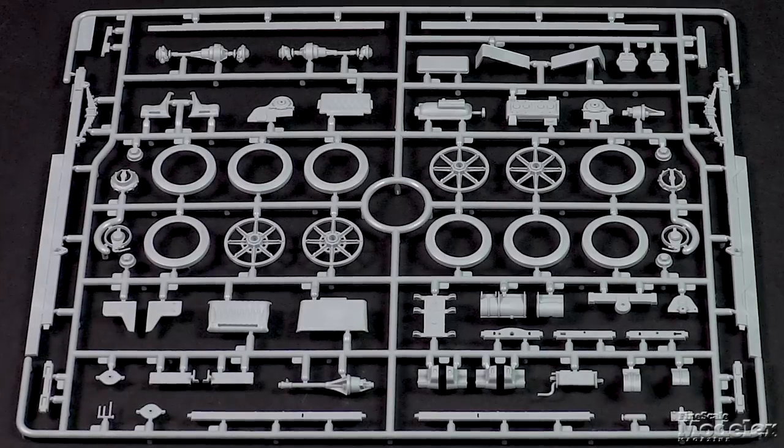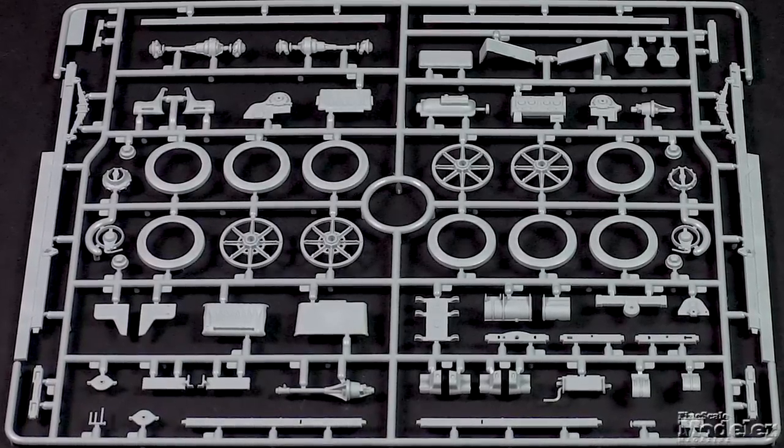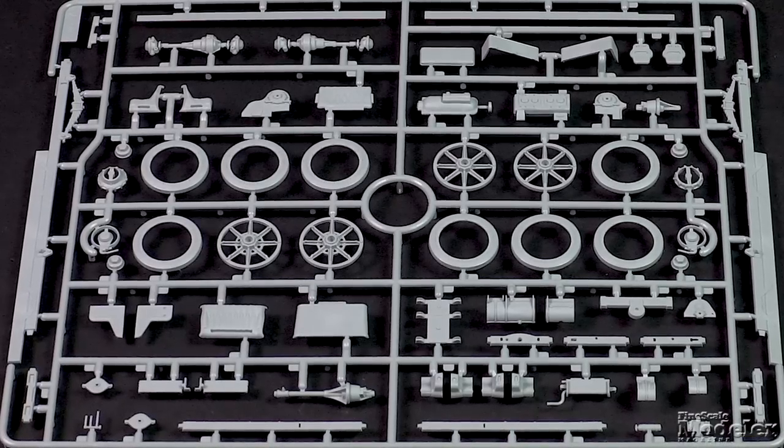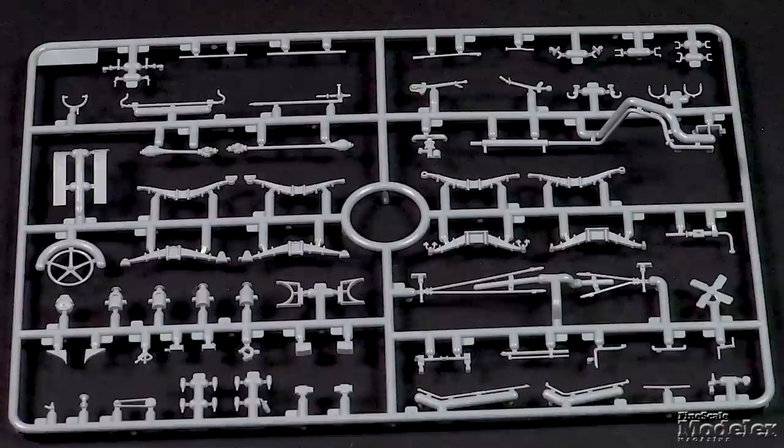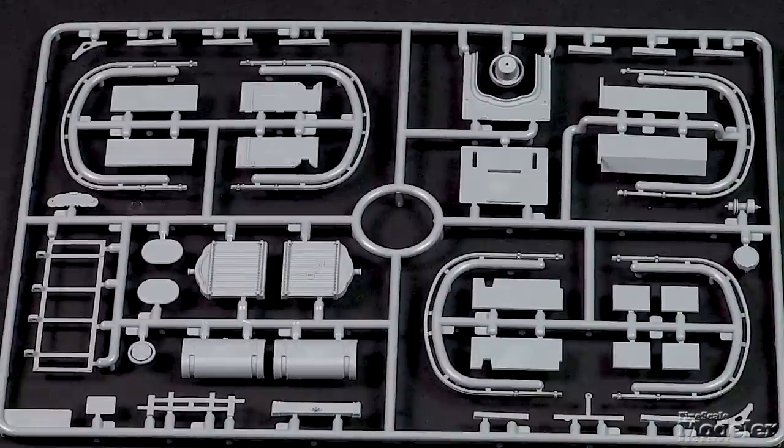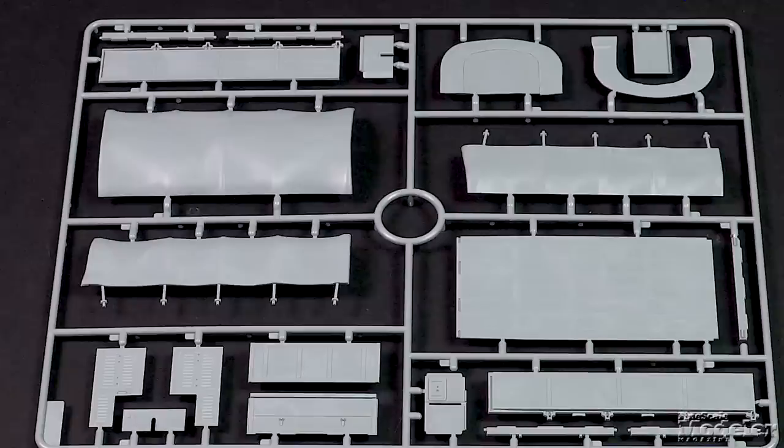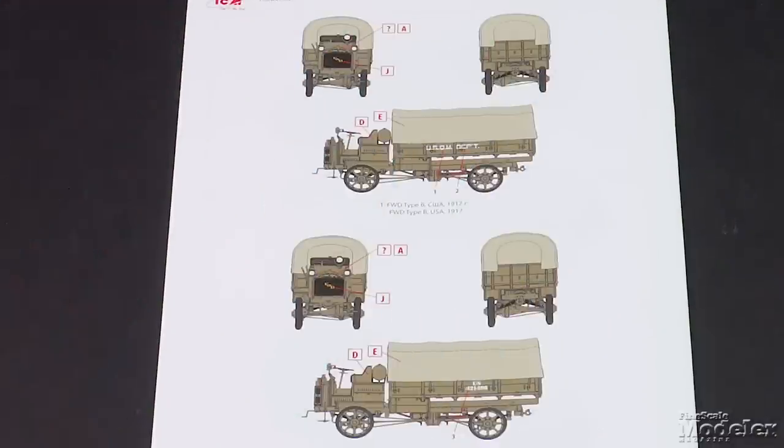The other vehicle, an FWD Type B three-ton truck with four-wheel drive, features a pretty complete engine, transmission, transfer case, multi-part wheels and long frame rails. That connects to the leaf springs and other finely molded suspension, drivetrain and steering components underneath the open cab, radiator and bed with optional exposed bows or canvas cover. Decals provide markings for two American trucks.